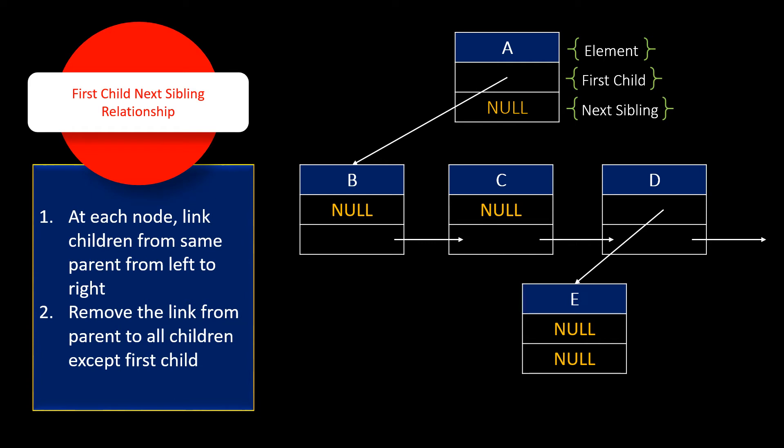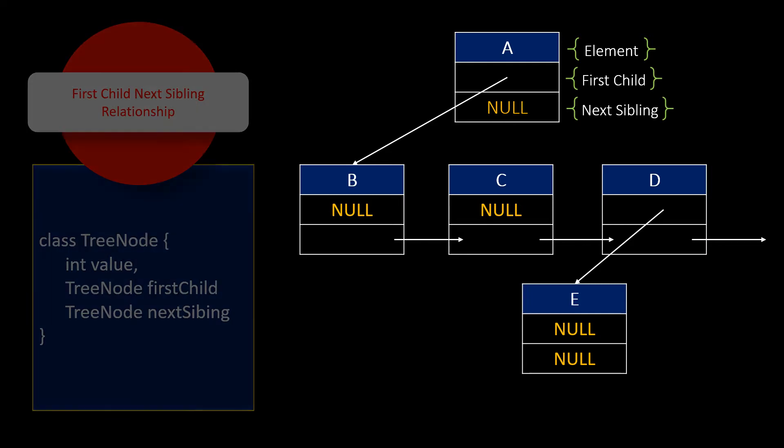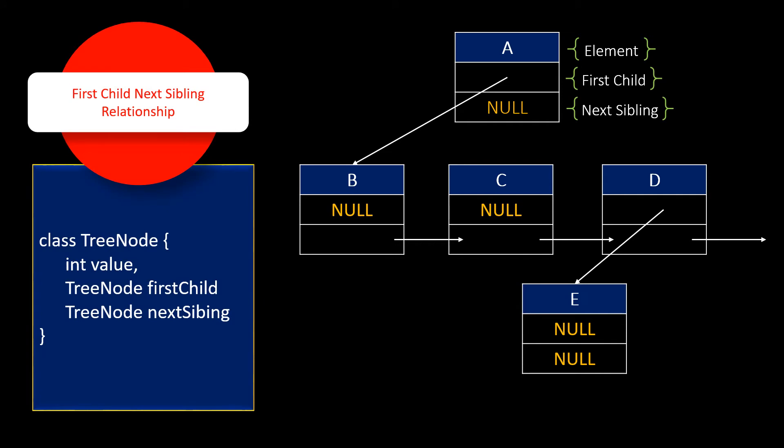Here is a representation of the nodes with first child next sibling relationship. Just pause here for a second if you have any confusions and compare it with our example. You will understand it clearly. So here is a tree node class. It has three attributes: the value of a node, the first child tree node, and the siblings for this node.